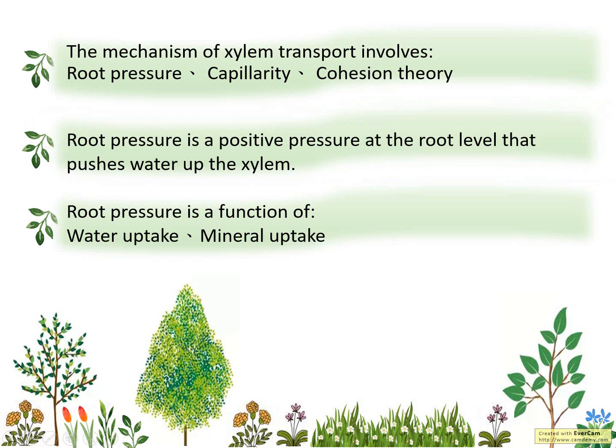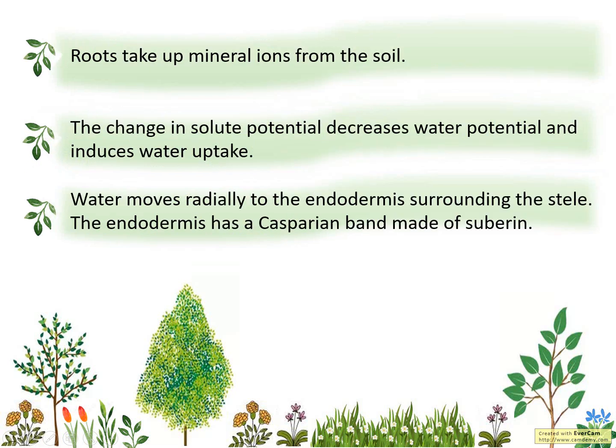First, root pressure is a force that pushes water into the xylem through the root, because root pressure is a positive pressure at the root level. The functions of root pressure are water uptake and mineral uptake. The minerals will be taken up from the root in the form of ions dissolved in water. Because of these ions, it will decrease the water potential of the plant and induce water uptake.